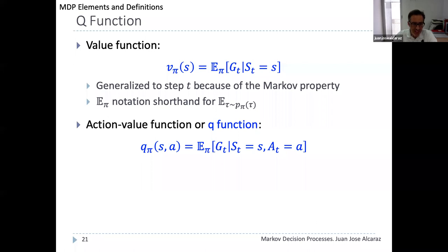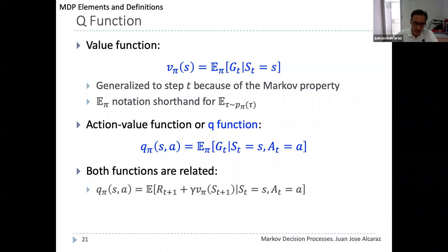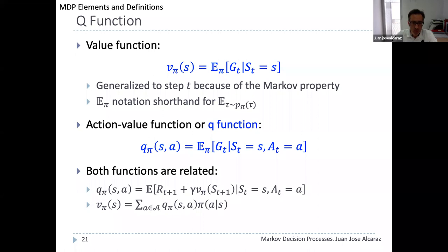The value of state s is the expected value of the Q function at state s with respect to the probability of actions given by pi. For deterministic policies, V_pi(s) equals Q_pi(s, pi(s)). Going back to the Frozen Lake example, the value of state 15 equals one-third times 1 (reaching the goal) plus contributions from transitions to state 11 and back to state 15, weighted by their respective probabilities and future returns. This generalizes to any state: V(s) equals the expected reward using policy pi plus gamma times the expected future return — a linear equation in the state values.